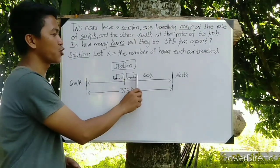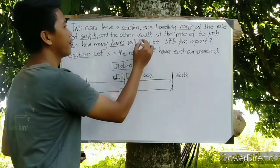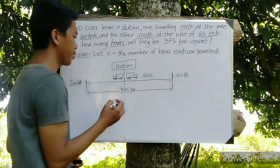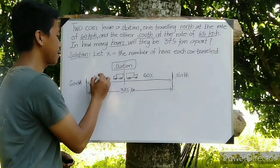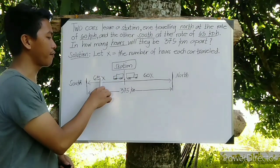And for the second car we have going to the south with the rate of 65 kilometers per hour, so we have to write here 65 times X. X refers to the number of hours this car traveled and we have 375 kilometers apart.